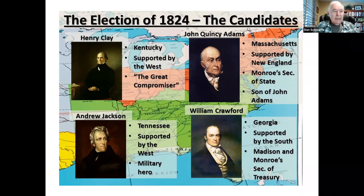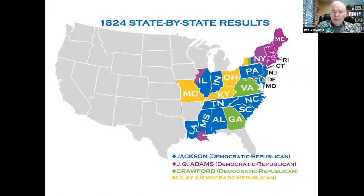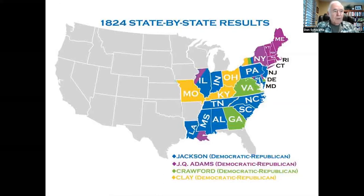Predictably, each section of the nation voted for a different candidate. This map shows that John Quincy Adams won the states in purple and Jackson won the states in blue. Crawford won the states in green and Clay won the states in yellow. But no candidate was able to get a majority of the 131 electoral votes needed to be elected president.